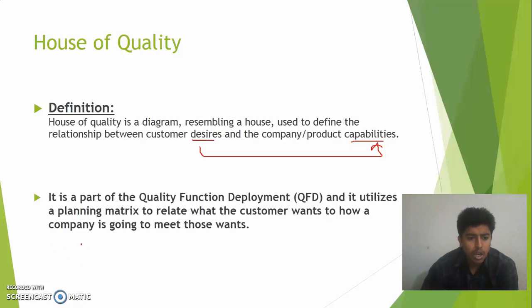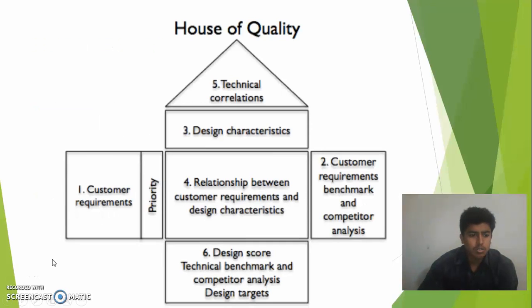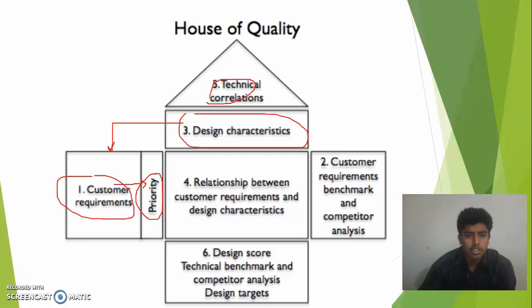So this is the overview of the House of Quality. Here we have the customer requirements, what customer wants. The design characteristics: how we're going to deliver. Priority: it is just how much weight customer assigns to each of the requirements. The technical correlations here.